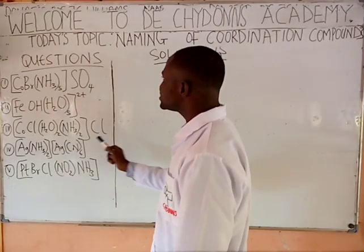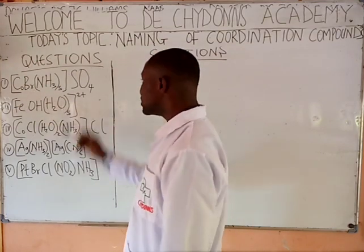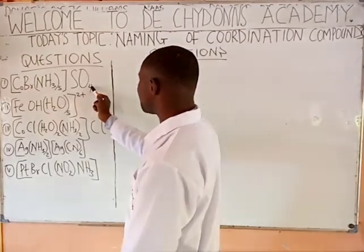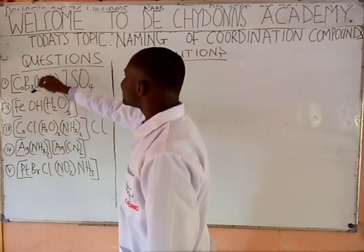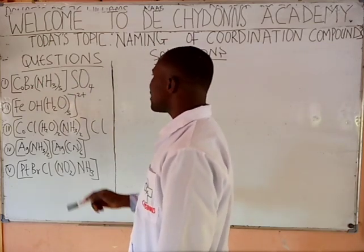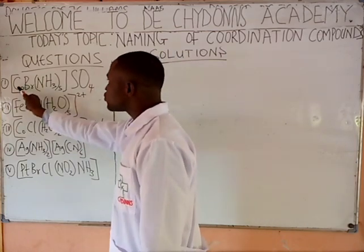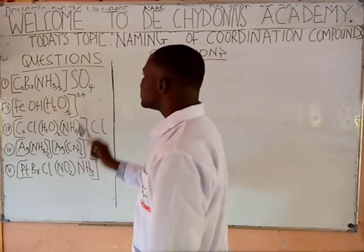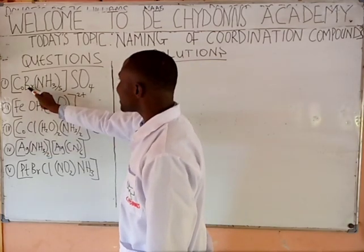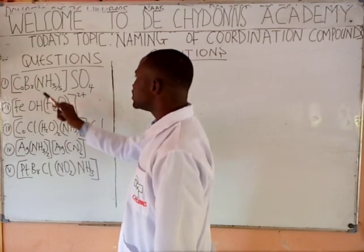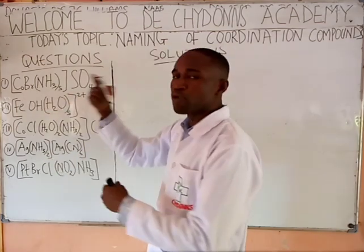You will notice that this metal atom is inside the complex ion. This is a compound already because it forms a salt already. This cobalt is inside the complex ion. Because it is a compound already — a salt — this cobalt will retain its name. This is an anion, bromine. Anytime you see an anion, the name must change: bromine will change to bromo. It will end in O.